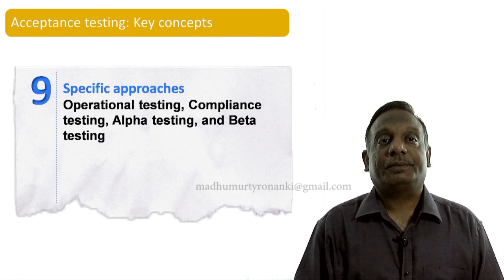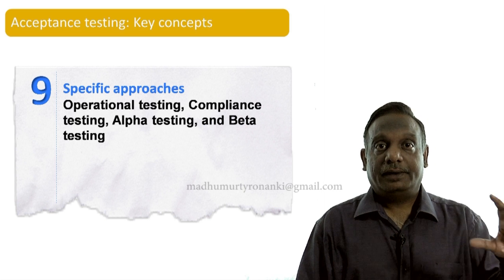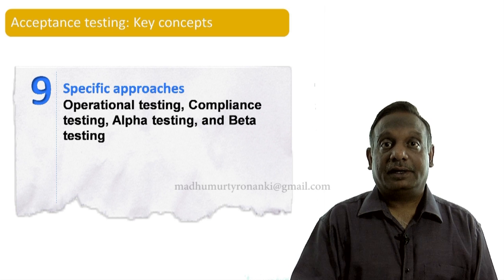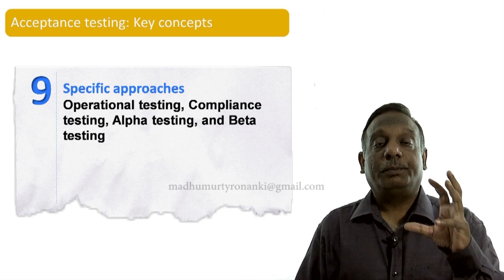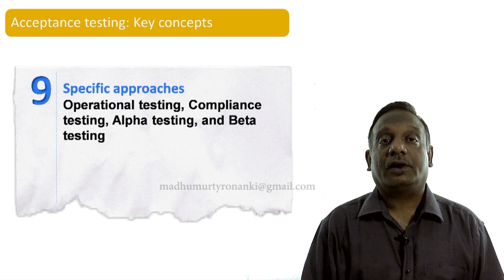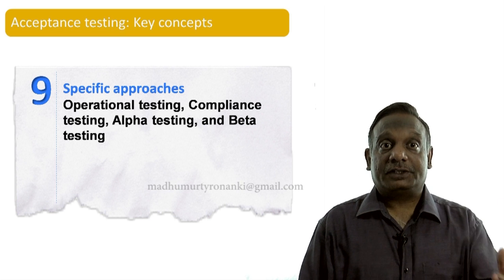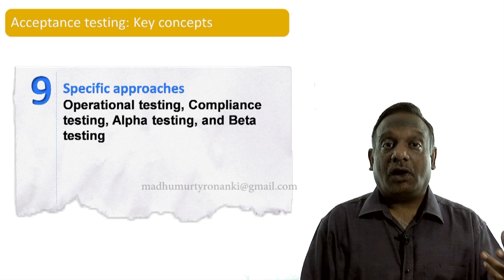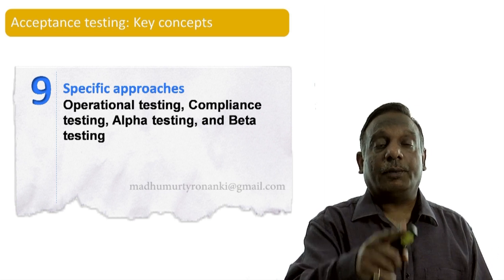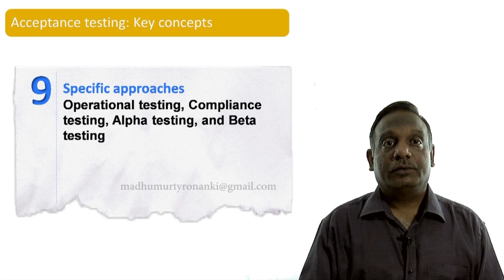The specific approaches used at acceptance level include operational testing — whether the system can be put into production — compliance testing to check government obligations, and in COTS and packaged applications we use alpha testing and beta testing. A variety of approaches are used, and we will discuss all of these now.